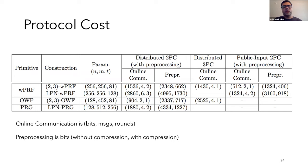So here's a table with the concrete costs for evaluating our candidates in different settings, including the distributed 2PC, distributed 3PC with replicated shares and no preprocessing, and the public input 2PC with preprocessing. So online communication is given in bits, number of messages and number of rounds, and preprocessing is given both without and with compression.